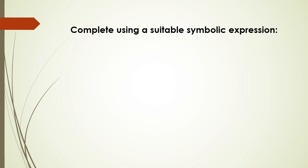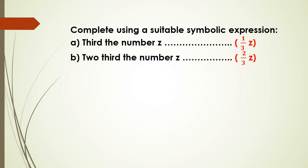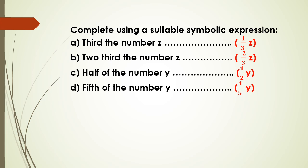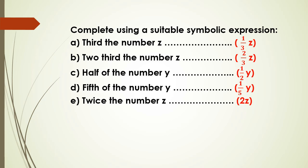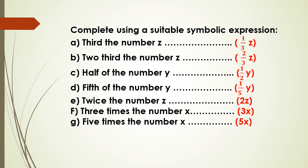Now complete using a suitable symbolic expression. Two-thirds of the number z. Half of the number y. One-fifth of the number y. Two-thirds of the number z. The answer: three times the number x will be 3x.